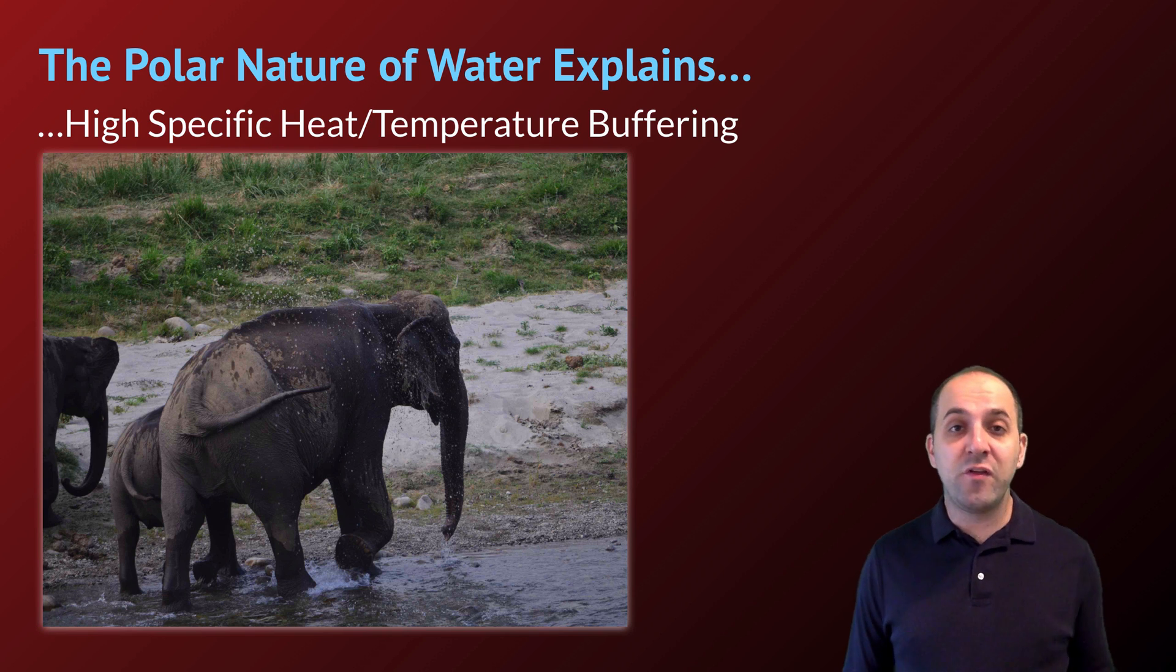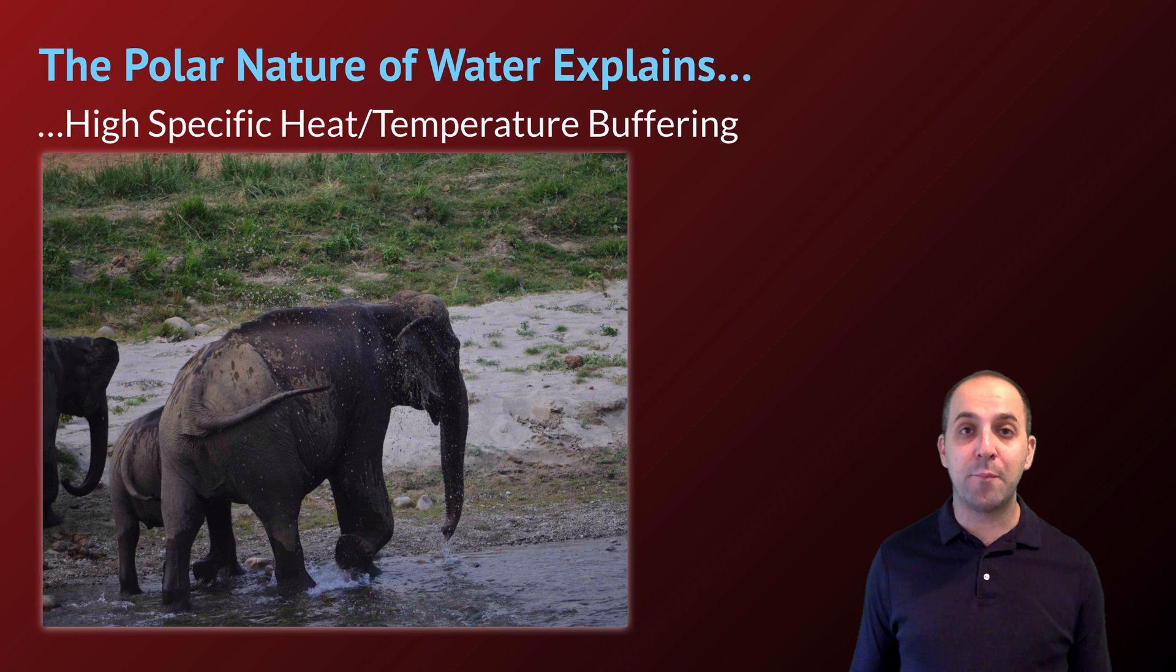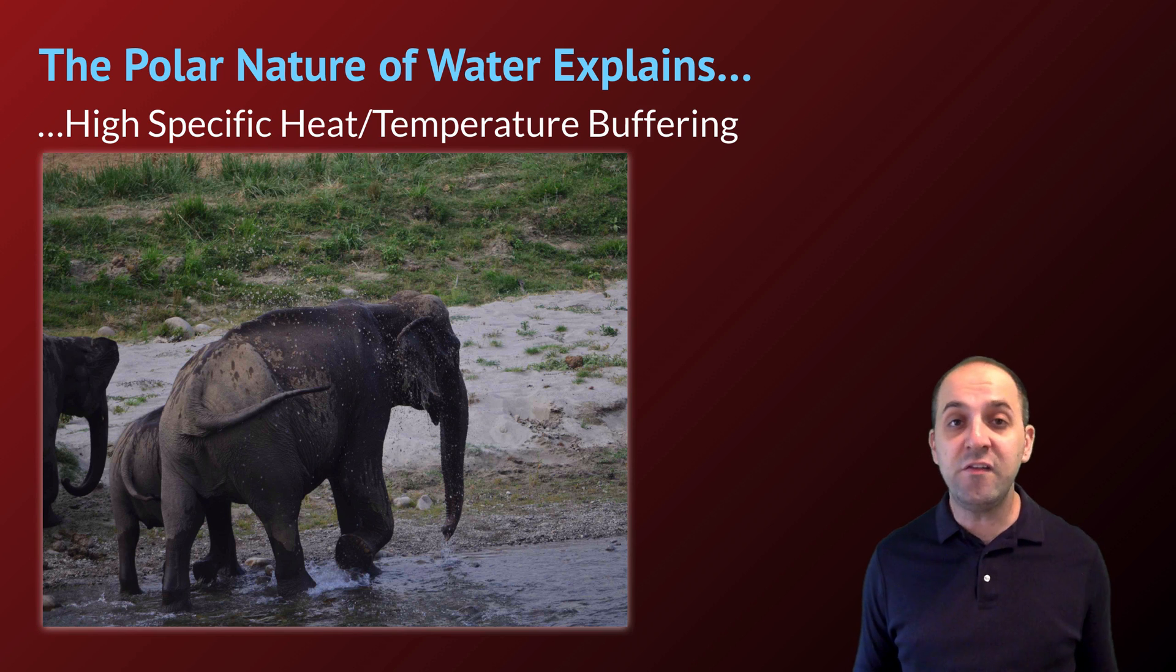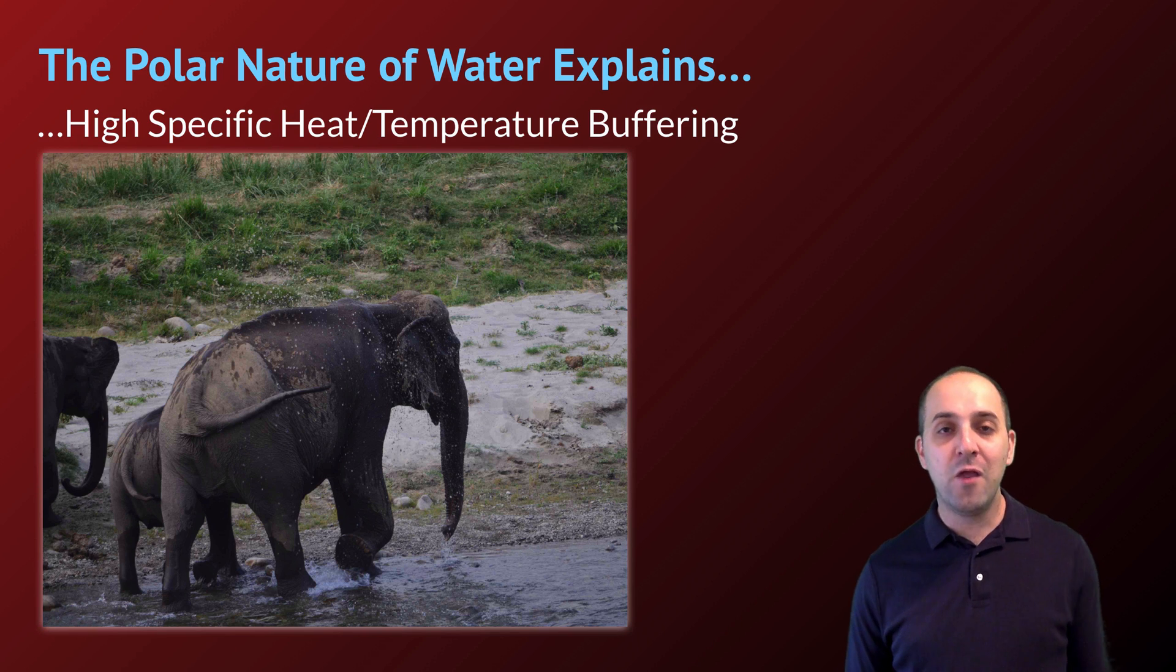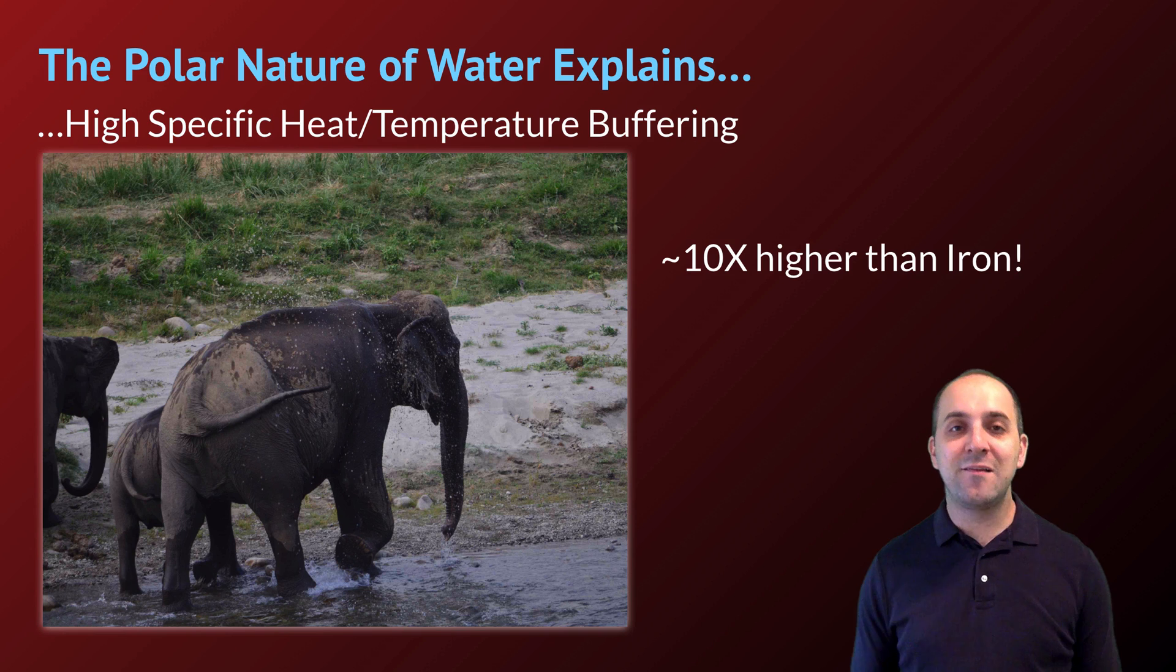This helps us understand how a substance reacts to heat absorption or release. As a substance absorbs heat, the average kinetic energy of its molecules increases and they move faster—we experience this as temperature going up. As a substance releases heat, molecules move slower and temperature goes down. Water has a very high specific heat: 4.18 joules per gram degrees Celsius. What you need to understand is that it is considerably higher than many other substances—approximately 10 times higher than iron's specific heat.